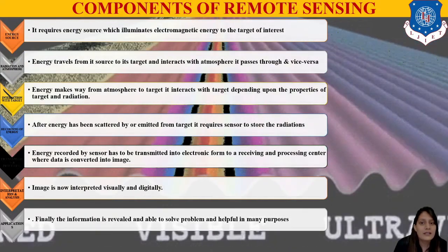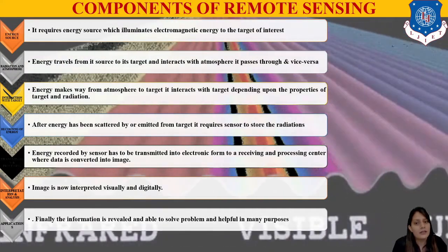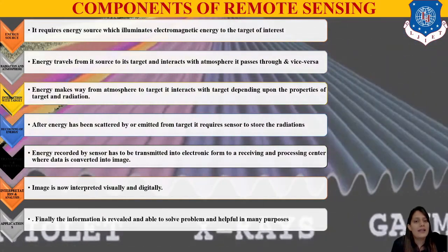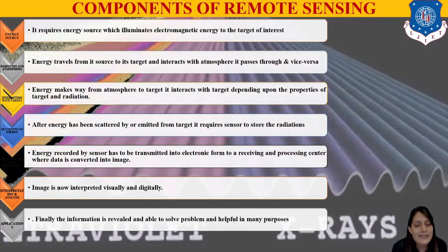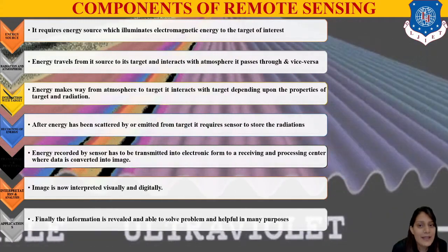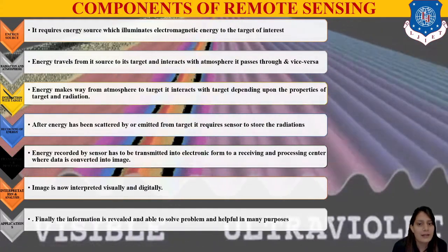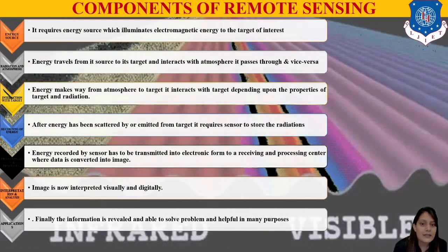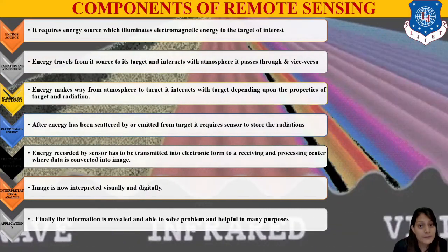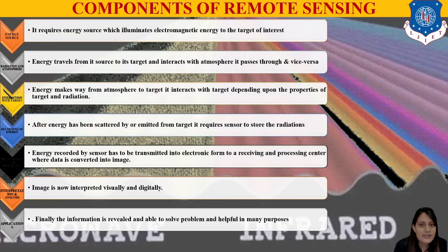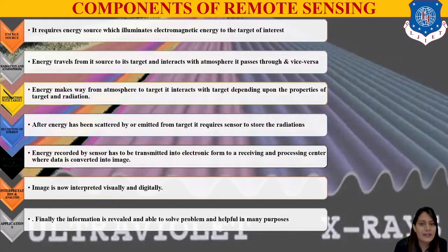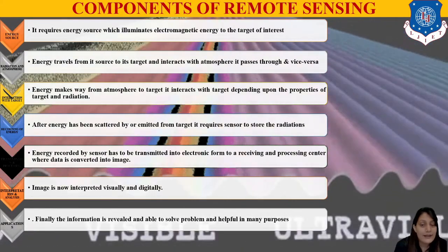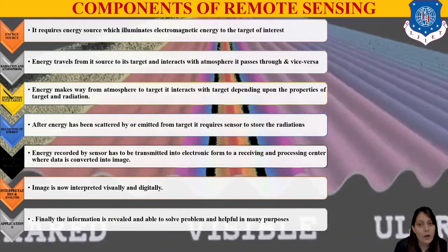Energy travels from the sun to the target, interacting with the atmosphere, and then goes to the sensor or antenna to collect information. The third component is interaction with the target: energy makes its way from the atmosphere to the target and interacts with the target depending upon the properties of both the target and the radiation. This interaction determines what information is collected.